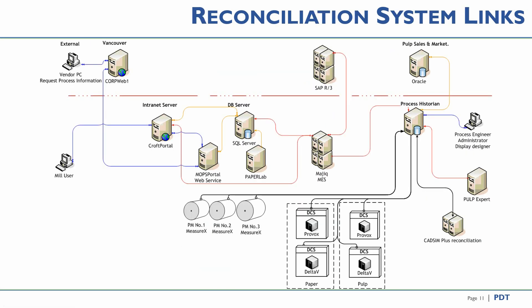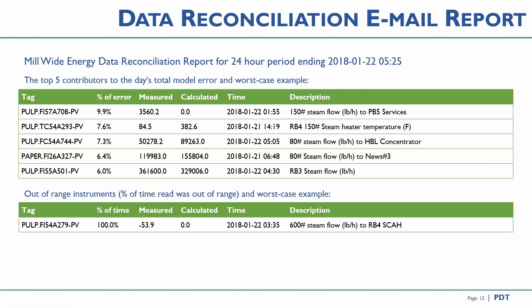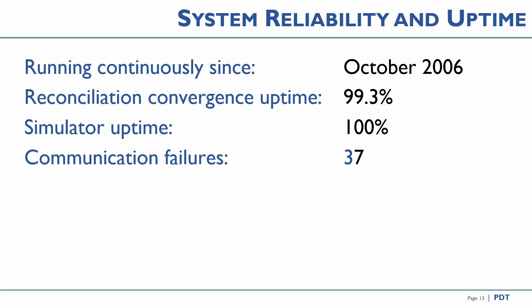The Ketson Plus data reconciliation computer connects to the mill process historian, gathering new measurements every few minutes and sending back balanced flows and additional key performance indicators. Each morning an email is automatically generated showing the five worst measurements from yesterday and any measurements that were out of range. Prior to the Ketson Plus data reconciliation, we had implemented a mass balance-based data reconciliation which used conventional methods. However, there were problems with conventional methods — with process areas going down, it would fail several times a day, sometimes failing two-thirds of the day. In October of 2006, we implemented the Ketson Plus data reconciliation and it has not failed a single time since.